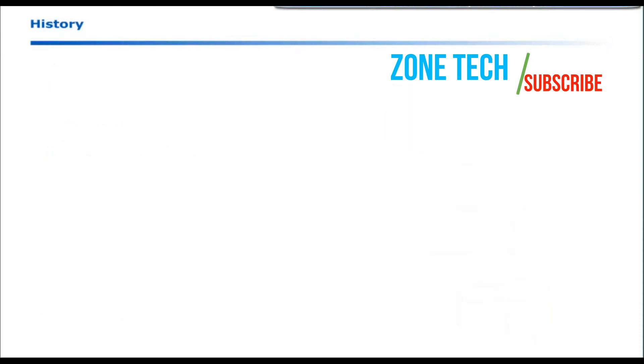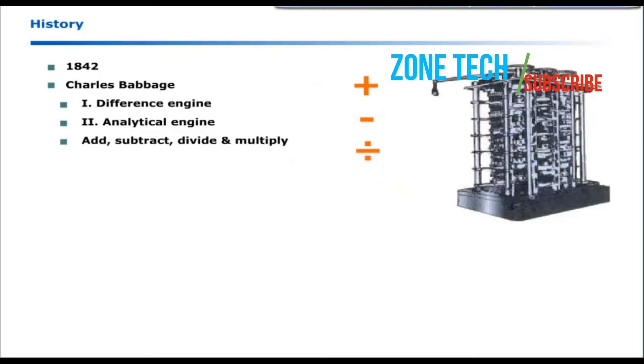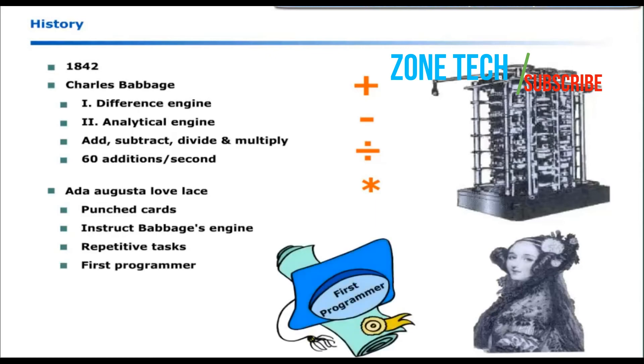Efforts were made by different scientists across the world. And in 1842, Charles Babbage introduced Difference Engine and then an analytical engine. It was a general purpose computer that could add, subtract, divide and multiply in automatic sequence. Its average speed was 60 additions per second. The idea of Babbage was further refined and improved by Lady Ada Augusta Lovelace. She proposed that punched cards could be used to instruct Babbage's engine to perform repetitive tasks. Due to her valuable contributions, she is considered as the first programmer.